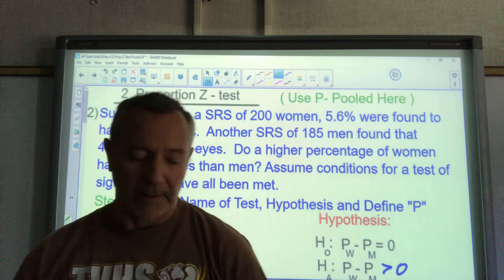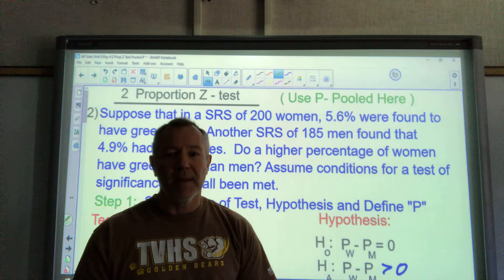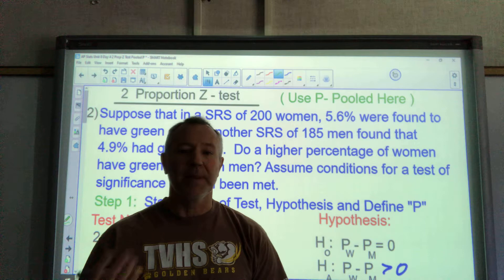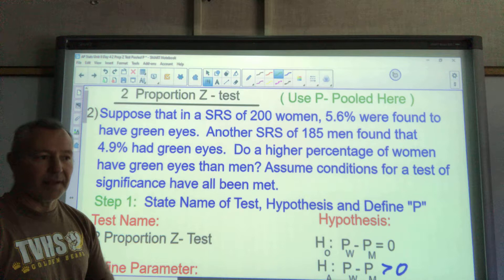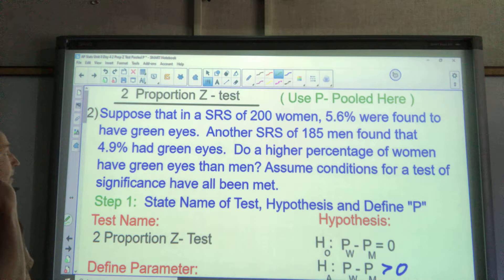Also, you'll notice that on our calculator sometimes it asks if you would like to pool your data, and we always say no or just leave that alone. But it won't even ask you on the two-proportion Z test if you want to pool it. It does it automatically because you have to. So you don't even have a choice, but that makes it hard to remember to put your work because it doesn't say anything about it in your calculator. So it's really easy to forget.